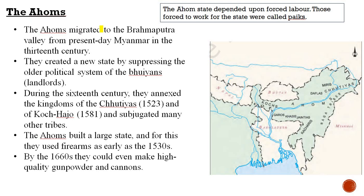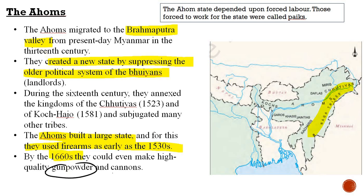The Ahoms migrated to the Brahmaputra valley and created a new state by suppressing the older political system of Bhuiyans (landlords). Ahoms built a large state using Pairams, and by the 1660s they were able to make gunpowder and cannons — making them a technologically advanced tribe.